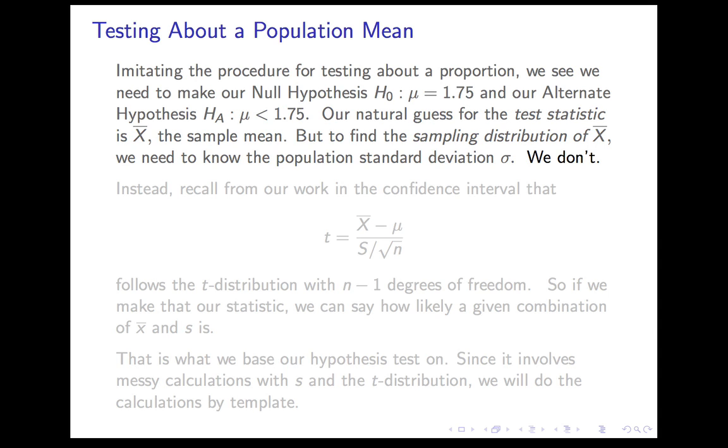So what we'll use instead is something you've seen before, briefly. We'll use this quantity: (x̄ - μ)/(s/√n), which you can look at as being a kind of z-score. Right? You subtract the mean and you divide by the standard error. So we're using the standard error of x̄, except, of course, we're using s in place of σ for the standard error. If we used σ, this would be a z-score. Instead, it's a t-score.